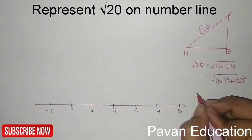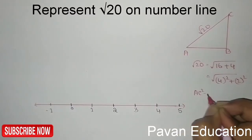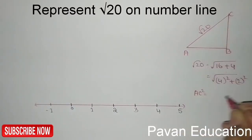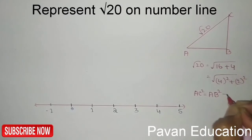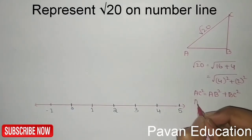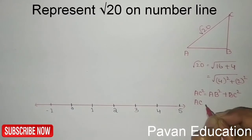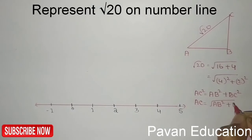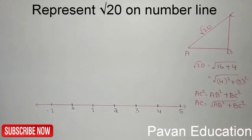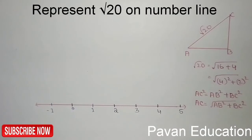According to the Pythagorean theorem: AC squared equals AB squared plus BC squared. If we take the square root, AC equals root of AB squared plus BC squared. Substituting these values: AB is 4 and BC is 2.